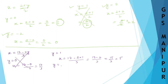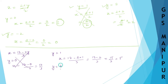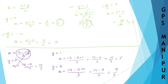Let us try y is equal to 4. x will be 17 minus 2 into 4 divided by 3, which is 17 minus 8 divided by 3, giving 9 divided by 3, so x is 3.